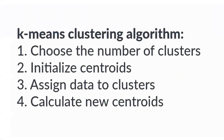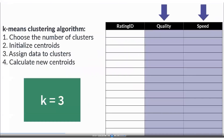There are four main steps when you do the K-means clustering algorithm. The first one is to choose a number of clusters, which is your K value. You initialize the centroid first, which is that star you saw in the previous slide. You start assigning data points to each cluster through iterations, and you would calculate new centroids as you go along. This helps to move your centroid to a more correct and more perfect location.